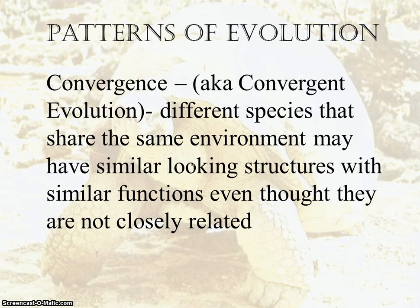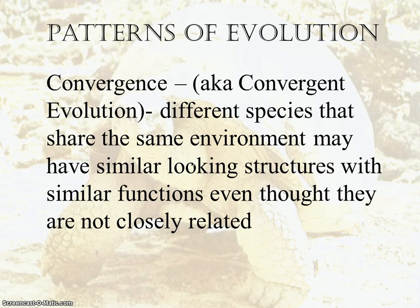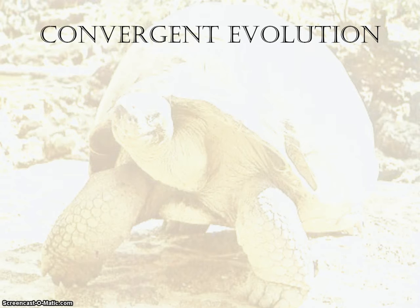You can also have a type of evolution that shows convergence. Convergent evolution is where you have different species that share the same environment. They might even look similar or have similar structures; however, they are not closely related.